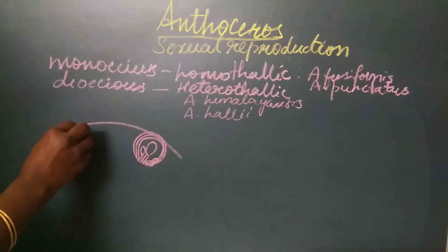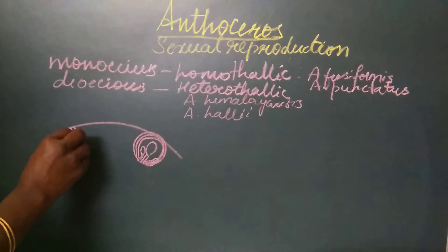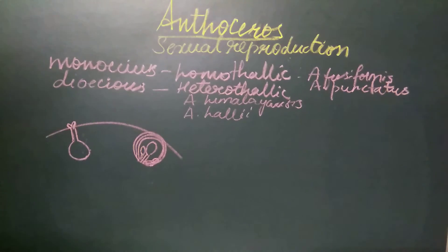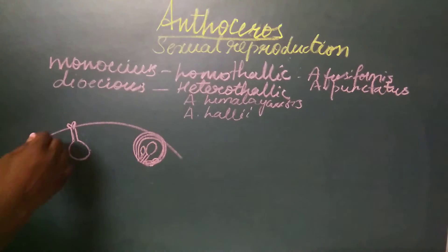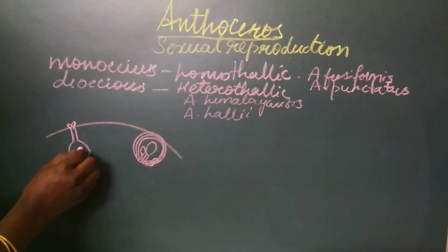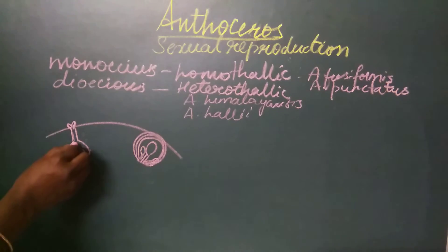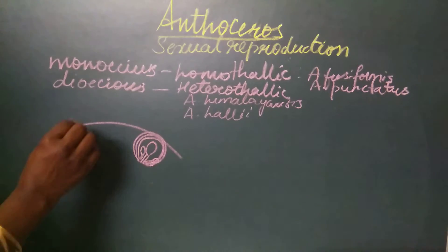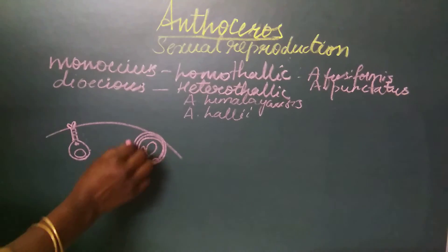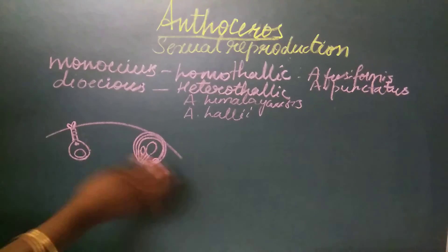The neck of the archegonia is very close to the epidermis, and the cover cells slightly protrude outside the epidermis. The archegonia contains the egg cell, the venter canal cell, and the neck canal cells, whereas the anthridial chamber contains the antheridium.